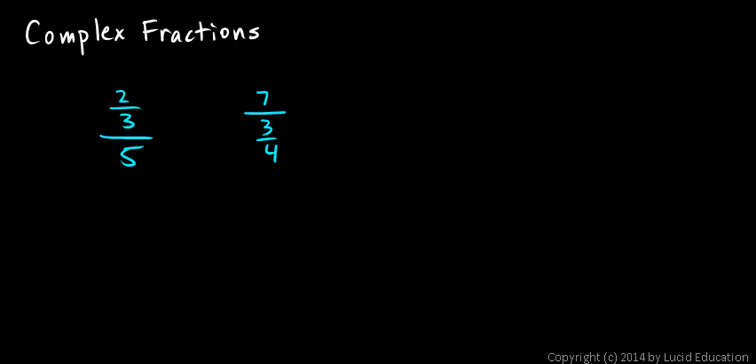Or the numerator and the denominator could both be fractions. For example, we could have 2 thirds over 5 sixths. These are all complex fractions, fractions that have other fractions within them.